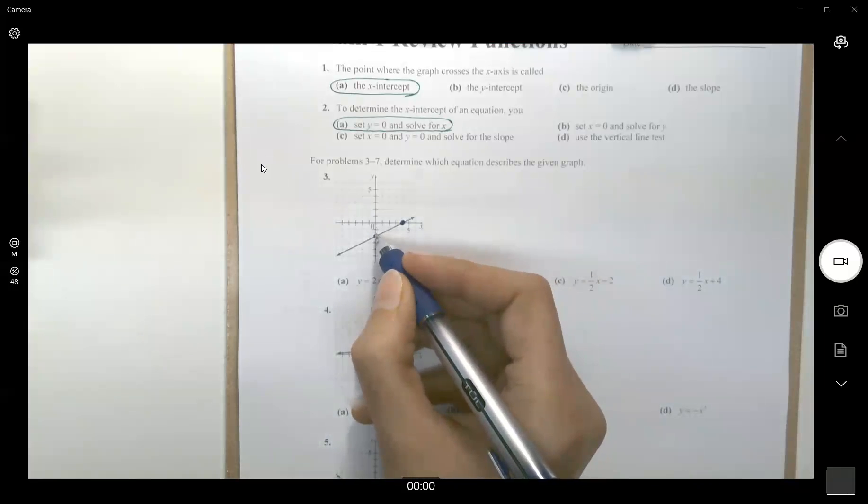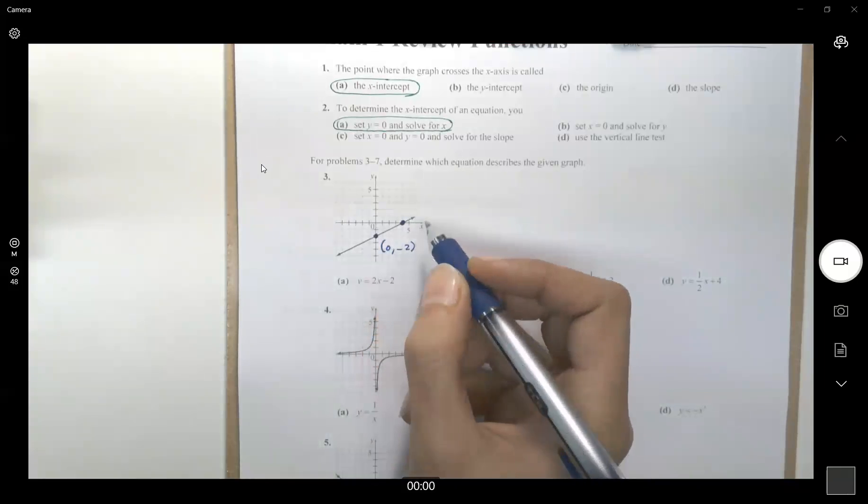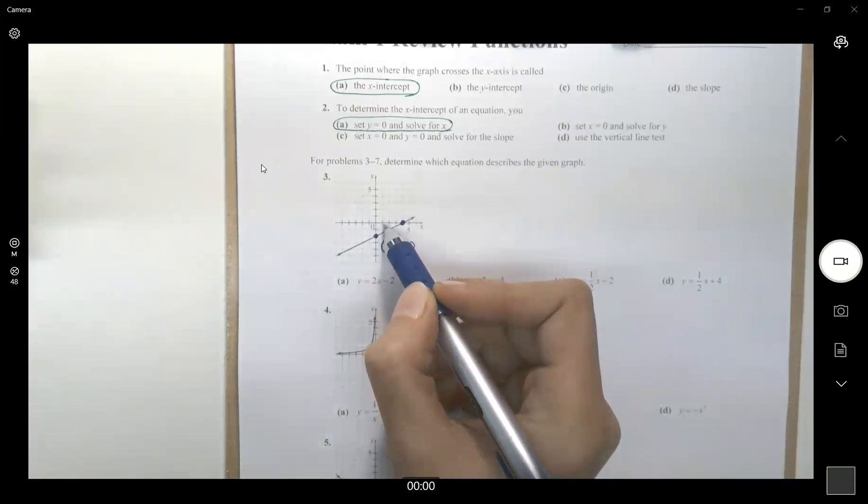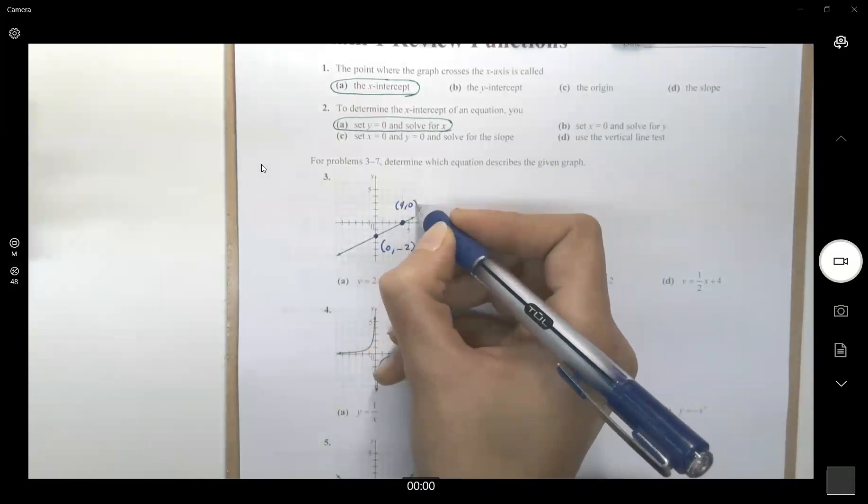This point has 0 and negative 2. And this point here, if you count 1, 2, 3, 4, it is 4 and 0.